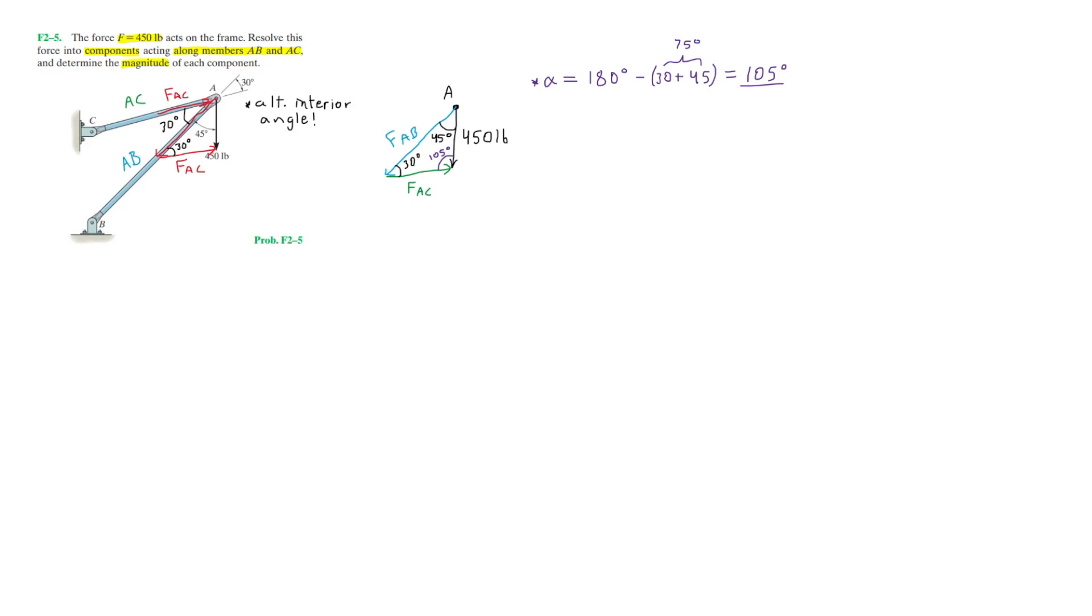Now we can solve for the forces. We can start off by finding force AB. Remember that this FAB is simply the magnitude of this force, which is the same as the length of the force vector. Since it's equivalent to the length of the force vector, that length is basically the length of this side of the triangle. Our only known force is 450 pounds, so we can say that we know the length of one side of this triangle. We have three angles.